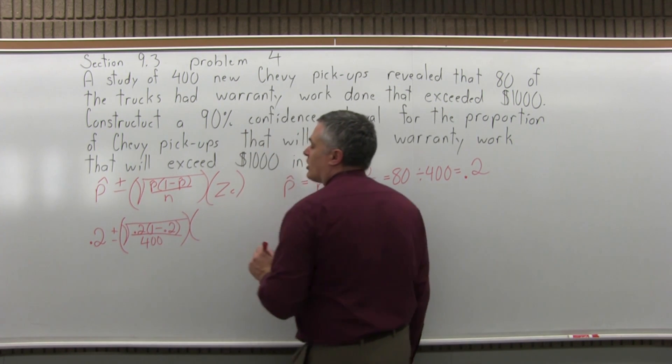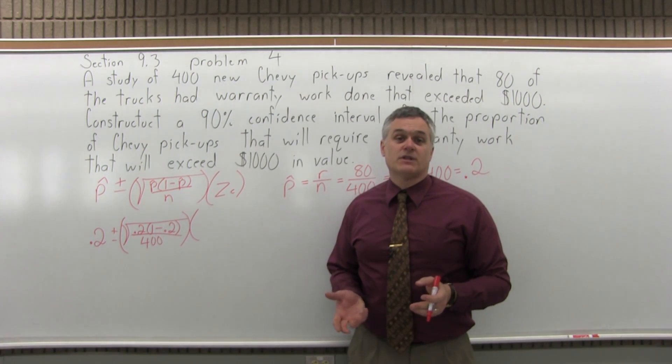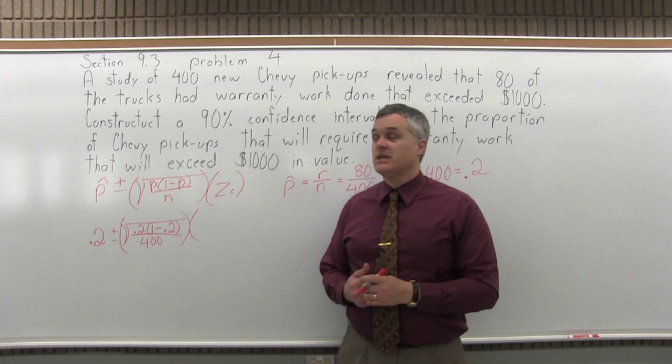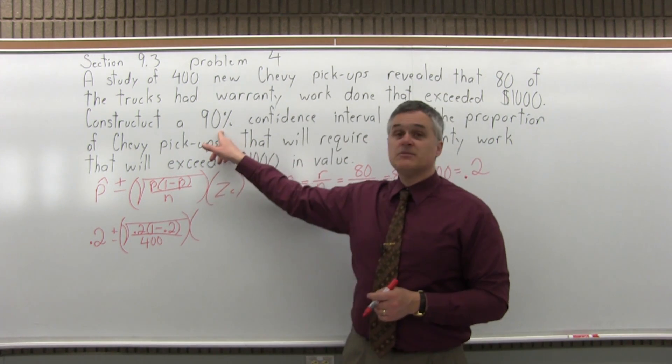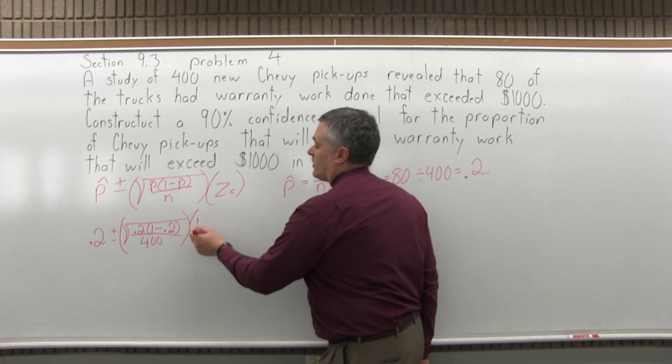Times z-sub-c, the confidence coefficient. So we have a little chart that tells us for the different levels of confidence what the confidence coefficient should be. So for this problem, it's 90%, and the little chart says the z-sub-c for 90% would be 1.645.